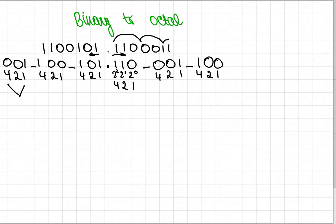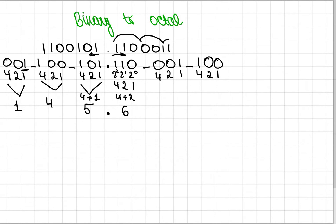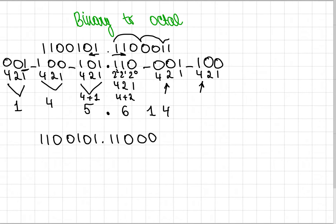So now for each group you just have to write the sum of numbers which are under the ones. So this would be 1. Here we just have 4. Here we have 4 plus 1, so that's 5. Our decimal point — here we have 4 plus 2, that's 6. Here we have just 1. And here we have just 4. So 1 1 0 0 0 1 0 1 0 0 0 0 1 1 in binary equals 1 4 5 point 6 1 4 in octal.